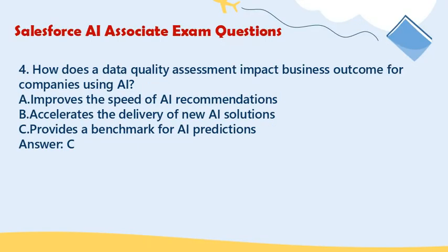Question 4: How does a data quality assessment impact business outcomes for companies using AI? A. Improves the speed of AI recommendations. B. Accelerates the delivery of new AI solutions. C. Provides a benchmark for AI predictions. Answer: C.